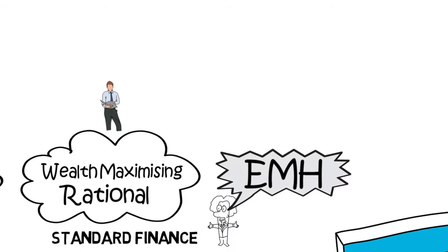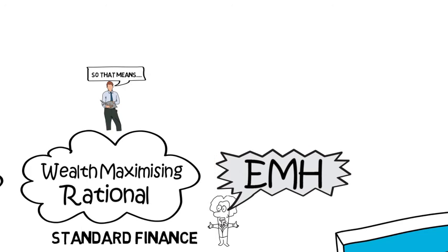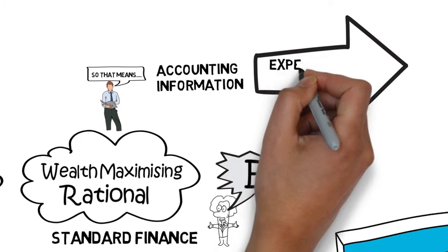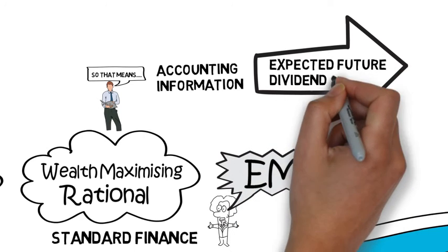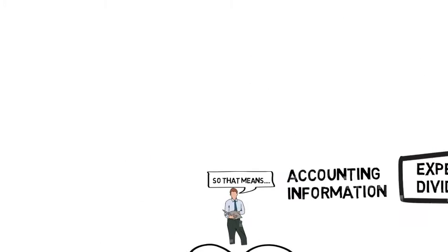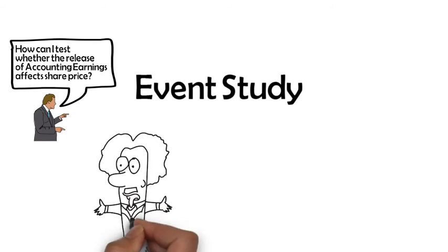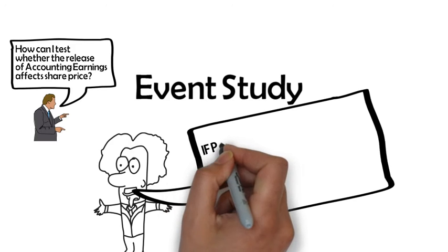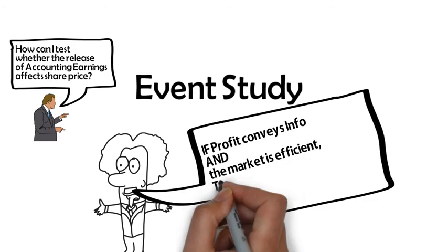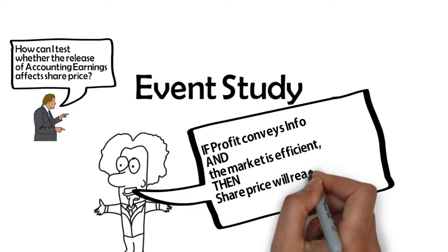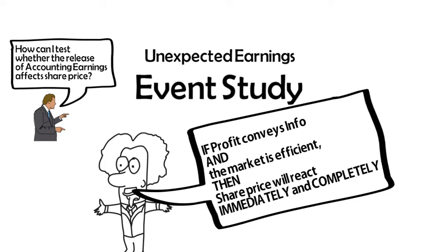Based on the theoretical framework that we've developed, we can make some predictions — we call them hypotheses — about the effect of releasing accounting reports that give investors a basis for estimating future earnings. The research design we can employ to test this hypothesis is an event study. The event we're interested in is the release of accounting information. If the release has any information content, we would expect the market to react immediately and completely to what they learn from the accounting report.